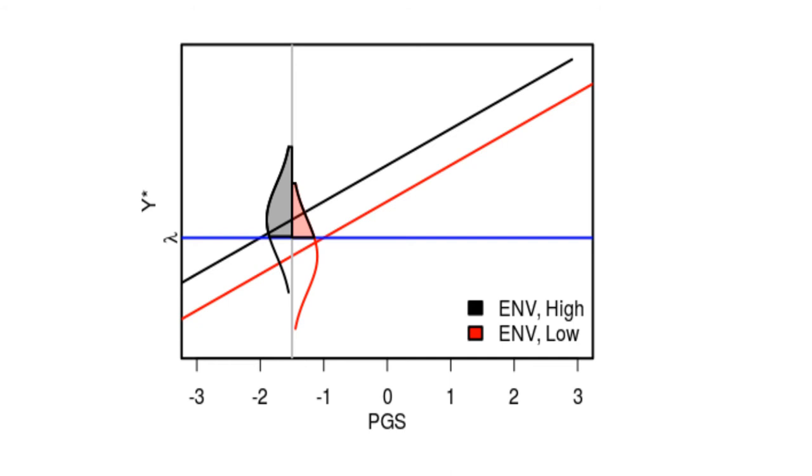But if we were to coarsen y star into y at this blue line above and below, then we actually could detect G by E using a linear probability model. So we have to be mindful of that.